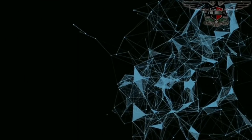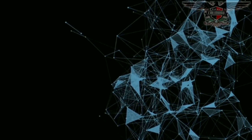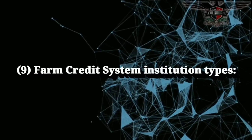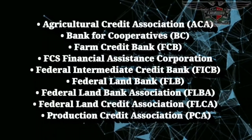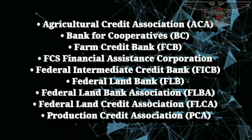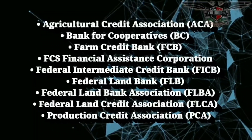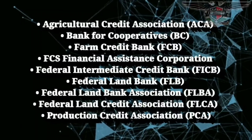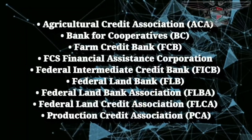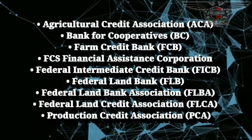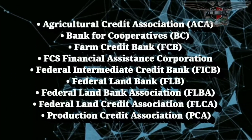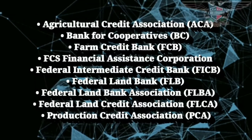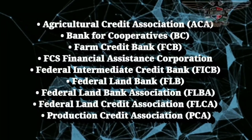Let's break down each branch of this Farm Credit System first. There are nine Farm Credit System institution types, which are: Agricultural Credit Association, Bank for Cooperatives, Farm Credit Bank, FCS Financial Assistance Corporation, Federal Intermediate Credit Bank, Federal Land Bank, Federal Land Bank Association, Federal Land Credit Association, and Production Credit Association.